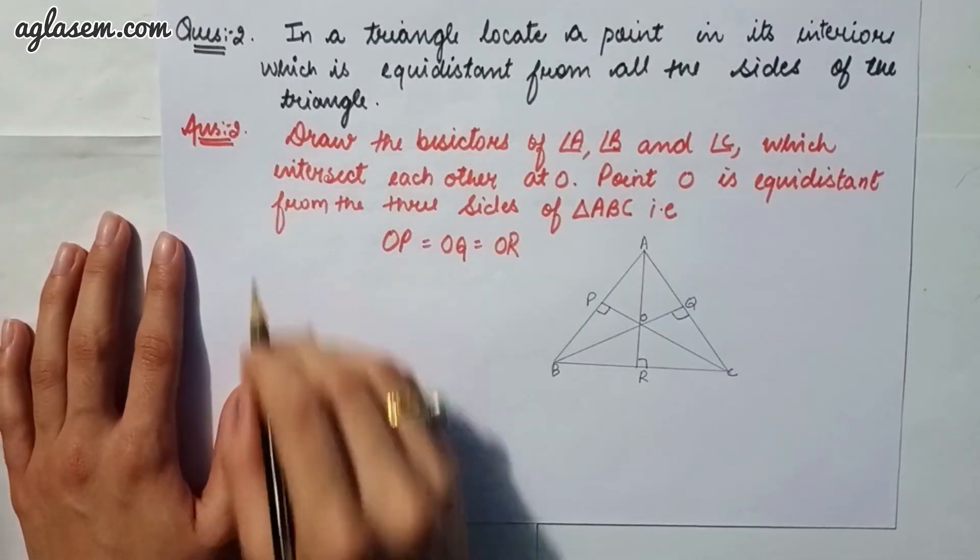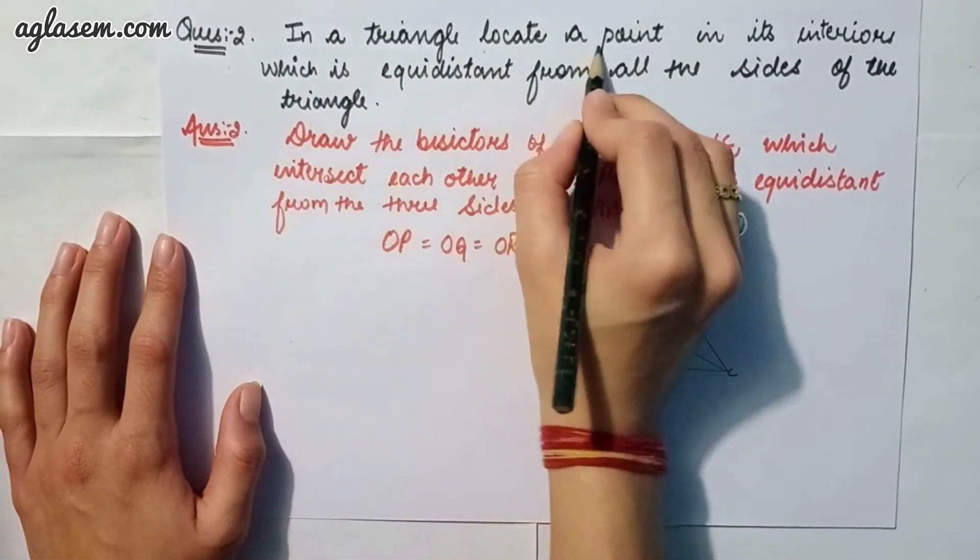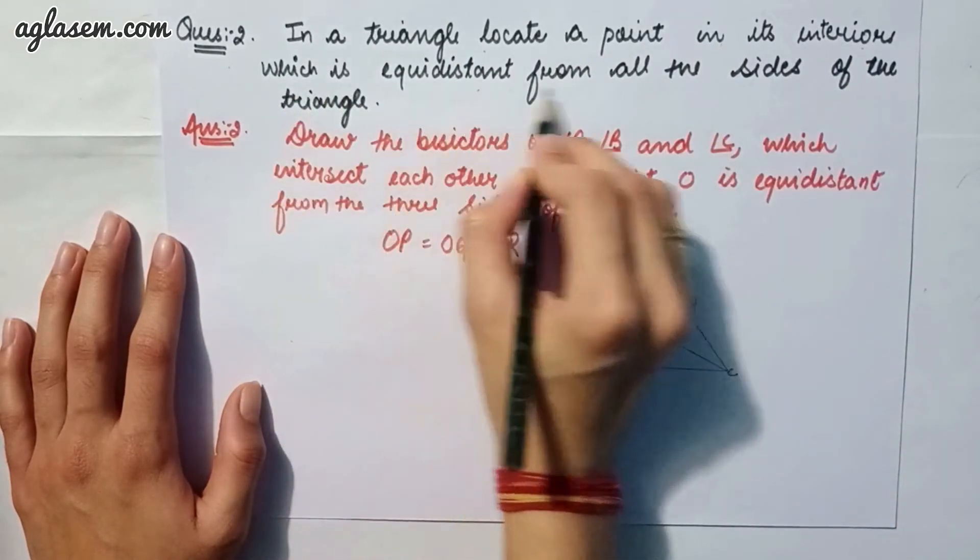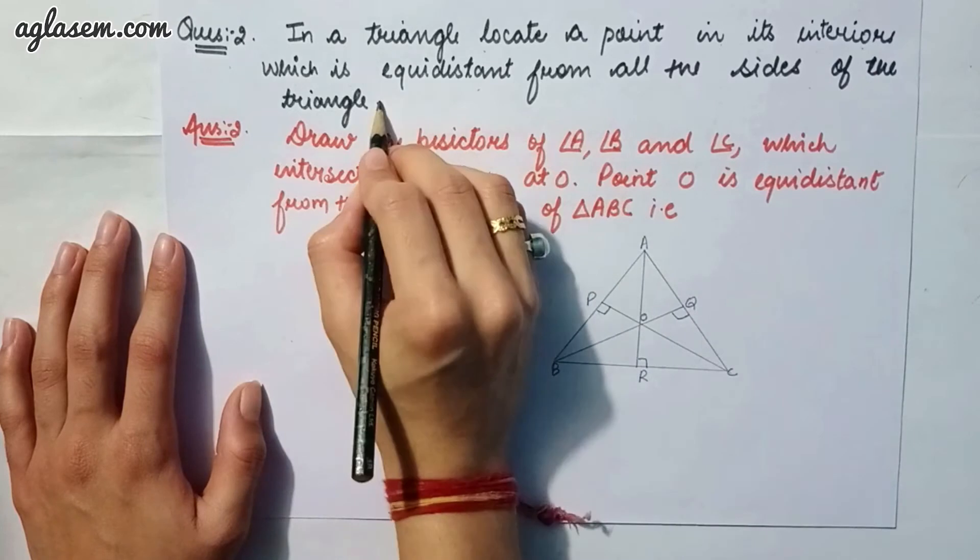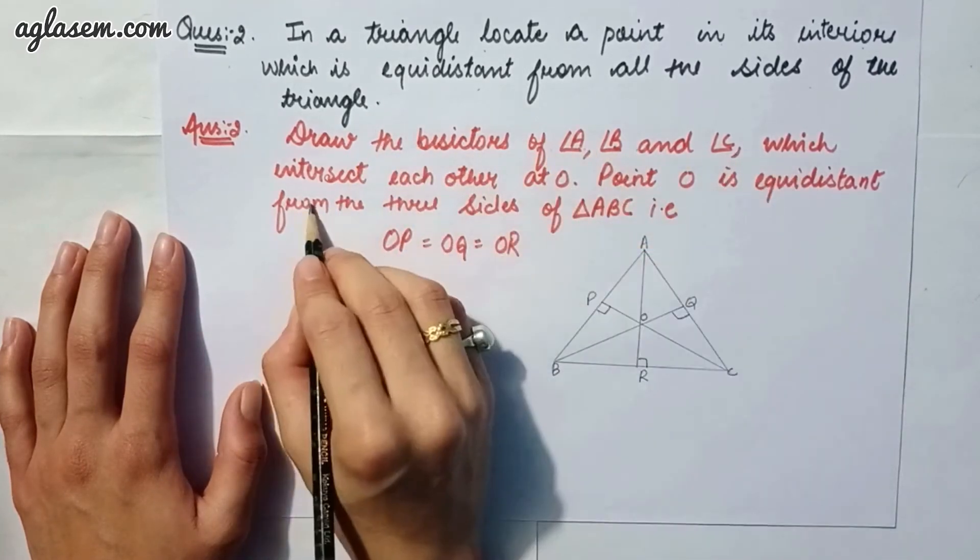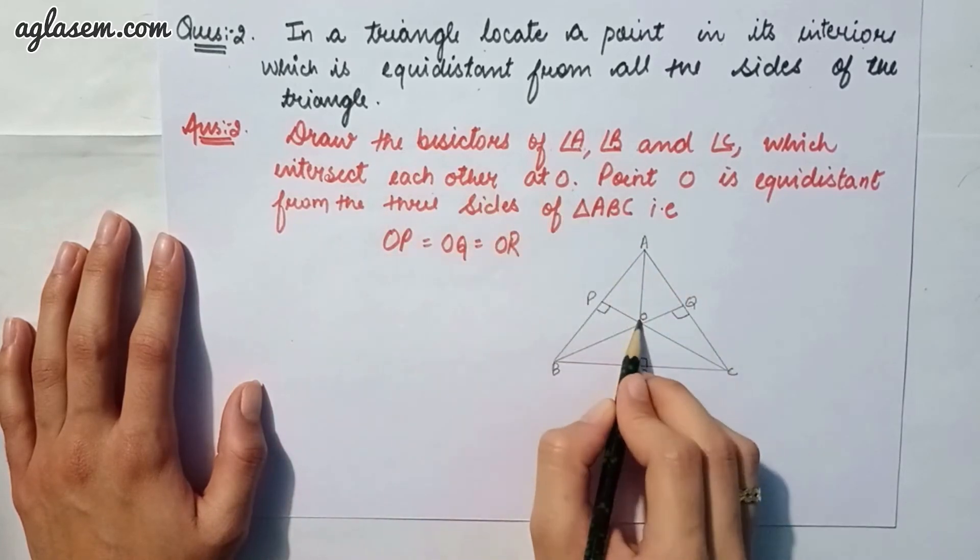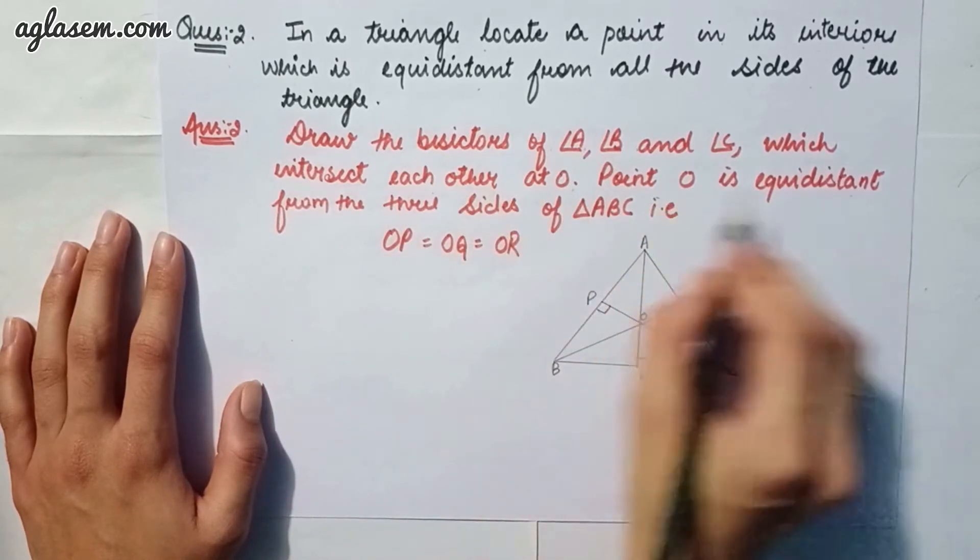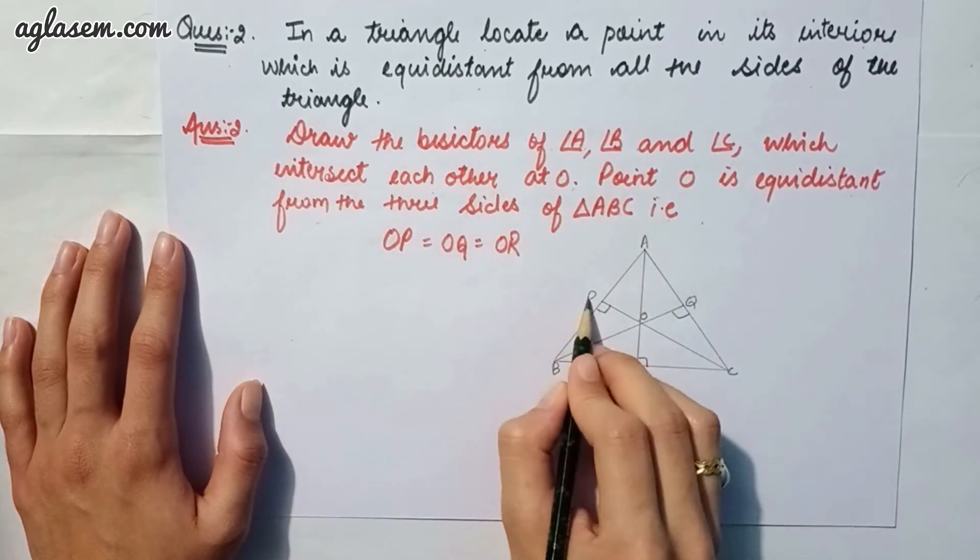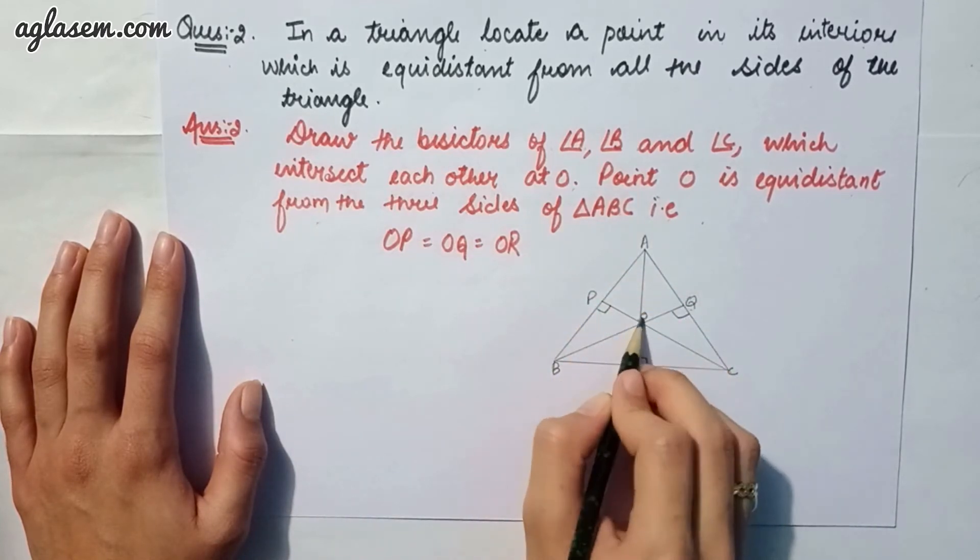Further moving to question number 2 which says: in the triangle locate a point in its interior which is equidistant from all the sides of the triangle. So we have to draw a bisector of angle A, angle B and angle C which intersects each other at O. Point O is equidistant from the three sides of triangle ABC, that is OP is equal to OQ is equal to OR.